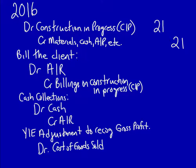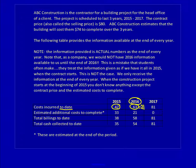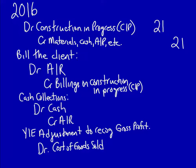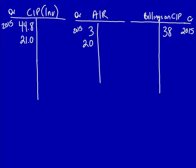What did we bill the client? Again, we have to calculate that for this year only. In 2016, we have billed a total of $58, which includes both 2016 and 2015. Therefore, to calculate the amount billed only in 2016, we deduct $38 from last year from the $58 total. In 2016, we billed them $20. Let's do the entry: debit accounts receivable $20, credit billings on CIP $20. Let's update the T-accounts: accounts receivable $20, billings on CIP $20.